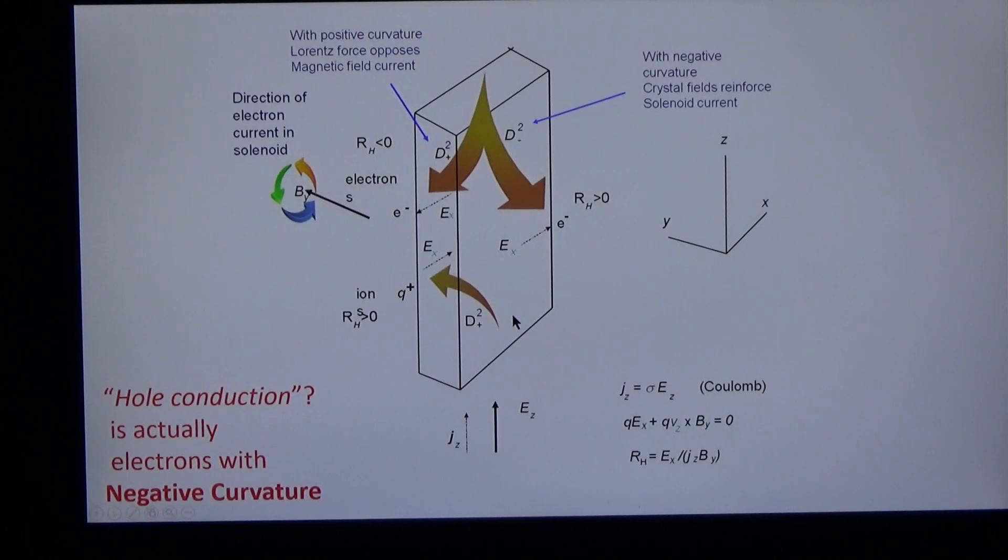But how does it come about then that sometimes we measure positive Hall coefficients? Well, it's easy to see if the charge is a proton or a lithium ion. The vertical acceleration is electric, the horizontal acceleration is magnetic and the Hall voltage is positive. But when the charge is an electron, it's more complicated.